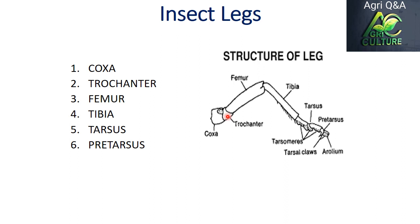The trochanter is the smallest segment. Next is the femur, which is the largest part. Next is the tibia, which is the longer part and it contains downward-projected spines. Next is the tarsus — it contains pseudo-segments called tarsomeres, and the last tarsomere is called the basitarsus, which is the largest one.